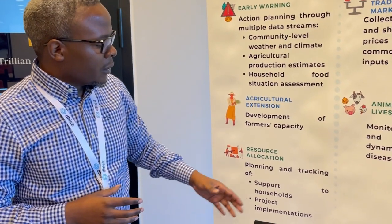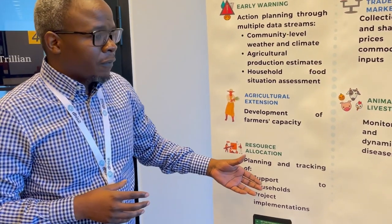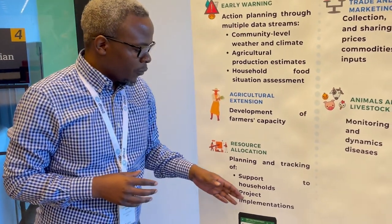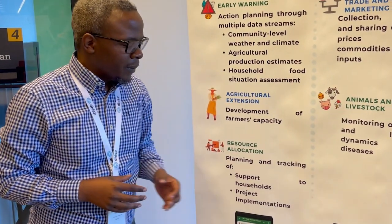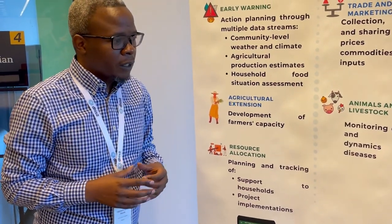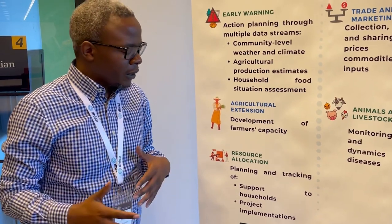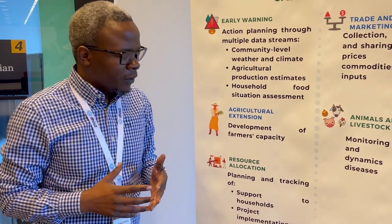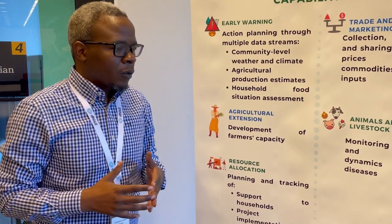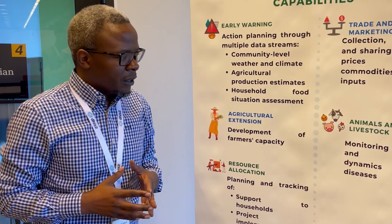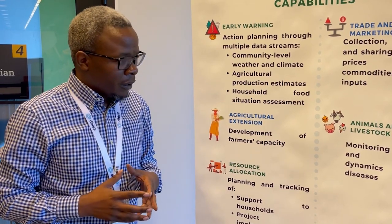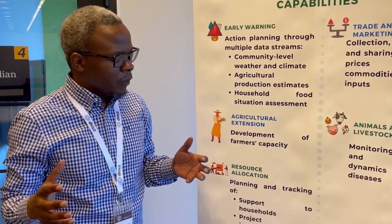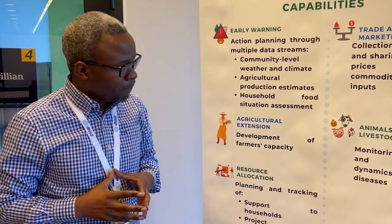At the higher level — at district level — there is project implementation tracking. This involves looking at what projects are implemented, where they are implemented, what sort of activities they are supporting, the budget lines, and the duration of those projects.